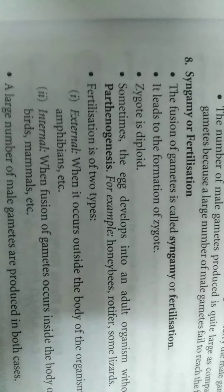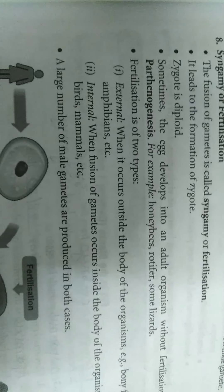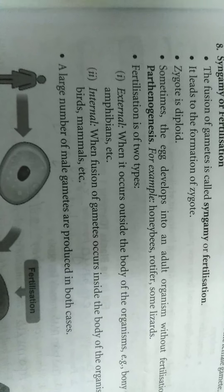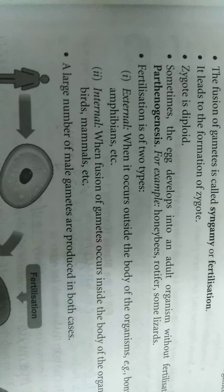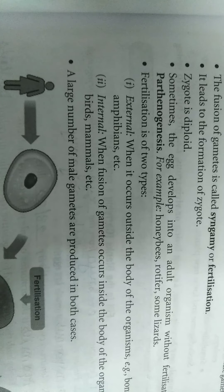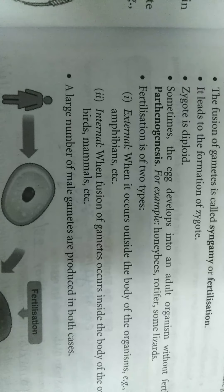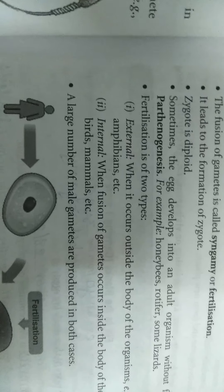Fertilization is of two types: external fertilization and internal fertilization. External fertilization — where fusion of gametes takes place outside the body of an organism. An external medium such as water is required. Example: bony fish, frog.